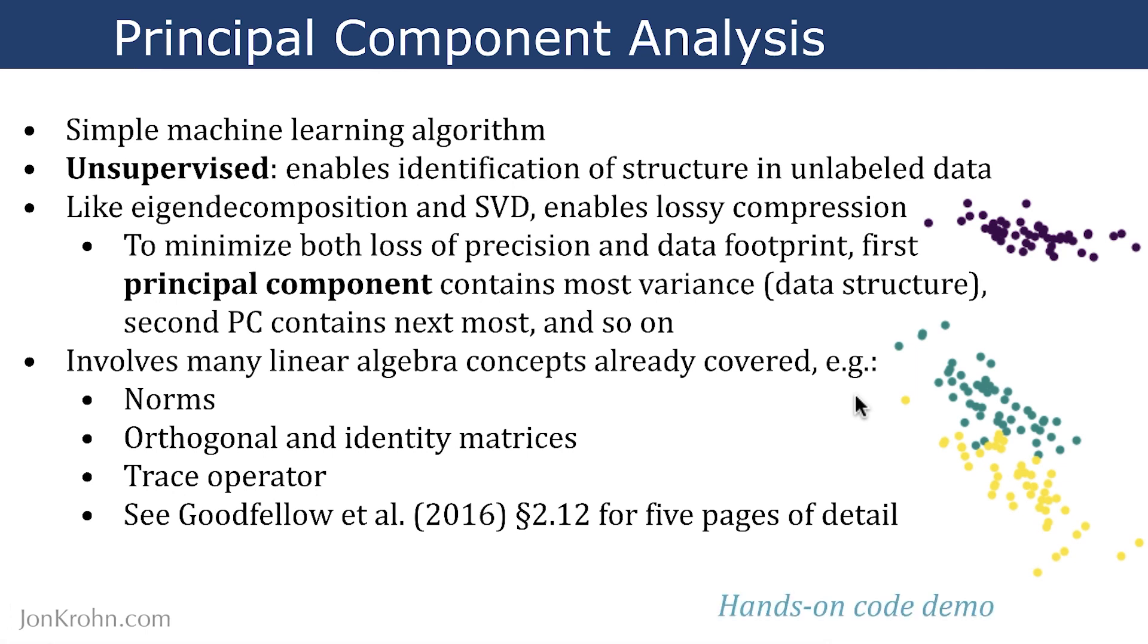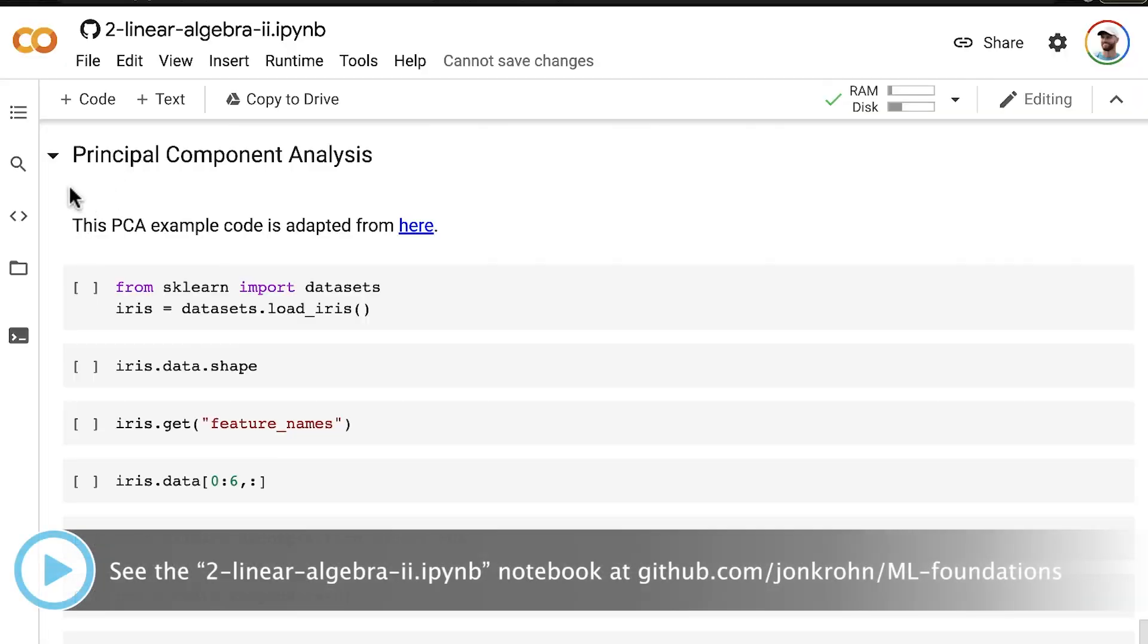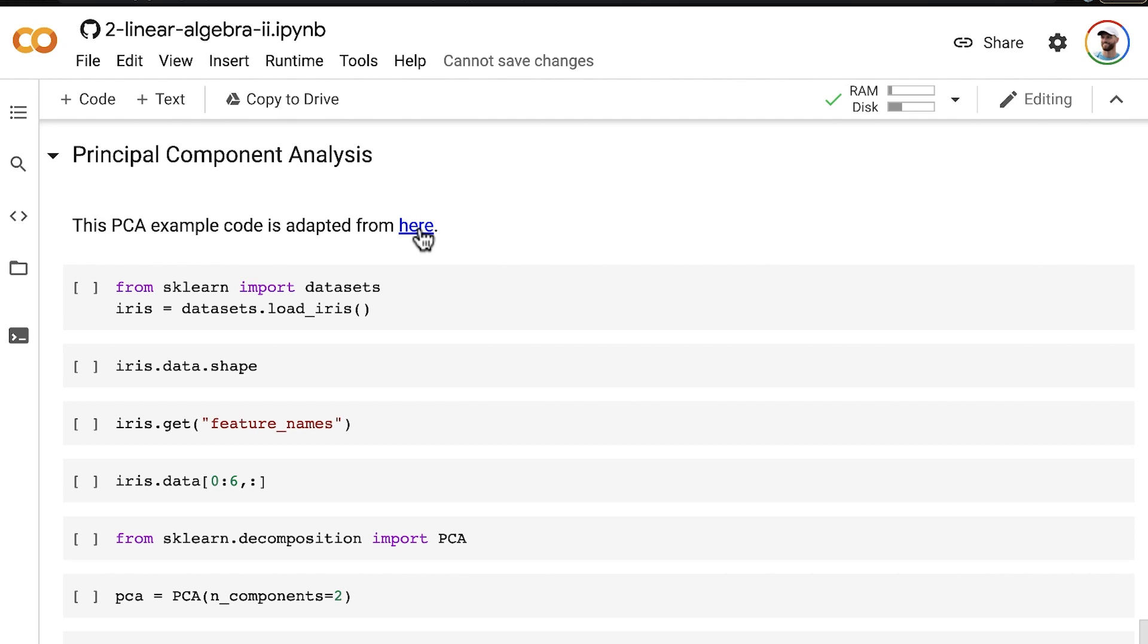So let's jump to a hands-on code demo to perform PCA at a high level. Make your way to the principal component analysis section of the linear algebra 2 Jupyter notebook. The PCA example code here is adapted from a cognitive science course.